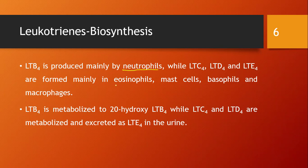LTB4 is produced mainly by neutrophils, while LTC4, LTD4, and LTE4 are formed mainly in eosinophils, mast cells, basophils, and macrophages. During asthma, eosinophilia is seen because the slow-reacting substances of anaphylaxis are produced in eosinophils.